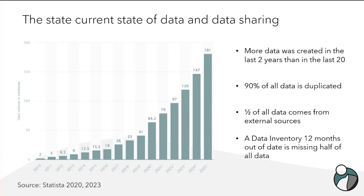Every 12 months, a data inventory loses half of its data — or more precisely, it becomes out of date. As an organization continues to use data and implement data strategies, they may be bringing in new data, disposing of data assets, or their data is changing. A lot of data is collected through business processes, and over that 12-month period those processes may change, which necessarily changes what the data inventory is capturing. For example, a data collection that ran every month for operational reasons may move to quarterly — and that's the kind of information that needs to exist in a data inventory.